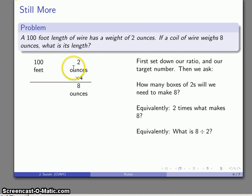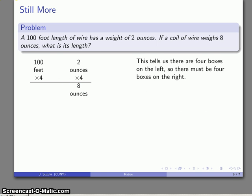If I take these two ounce boxes, I take four of them, I get an eight ounce box. I'm going to take the same number of boxes of the hundred foot length. So I'm going to take four of those hundred foot boxes. That gets me 400 feet of length. I arrive again at my correct answer. That eight ounce coil of wire is a coil of wire with a 400 foot length.